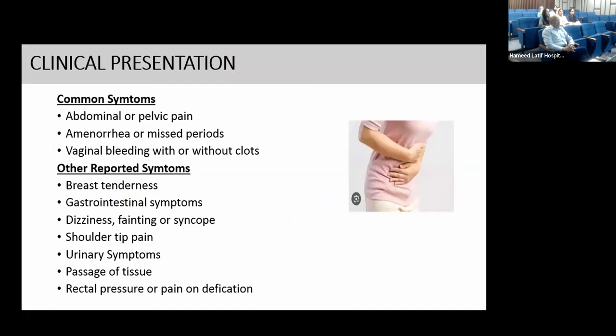The clinical presentation of ectopic pregnancy represents the triad of three A's: abdominal pain, amenorrhea, and abnormal vaginal bleeding. Other reported symptoms include breast tenderness, gastrointestinal symptoms such as diarrhea, vomiting, and nausea, dizziness, fainting or syncope, shoulder tip pain — which can occur if massive hemorrhage in the peritoneal cavity irritates the diaphragm — urinary symptoms, passage of tissue, rectal pressure, or pain on defecation.